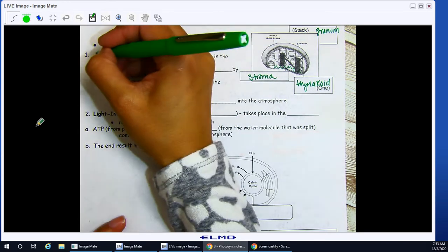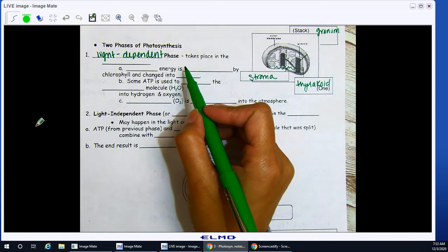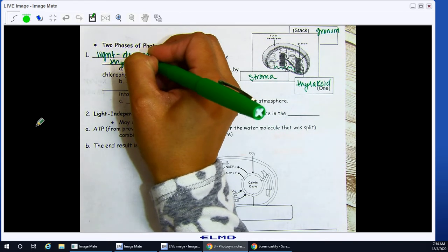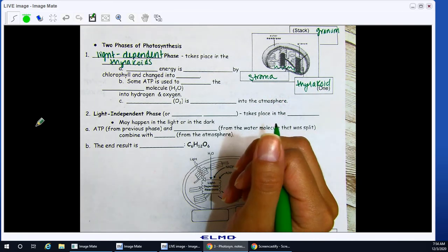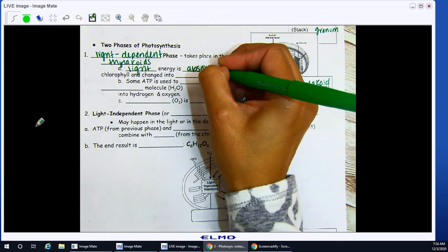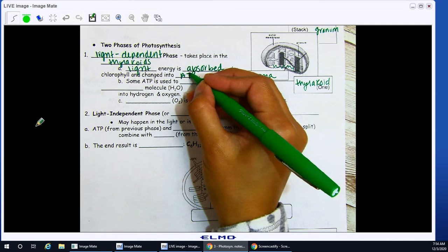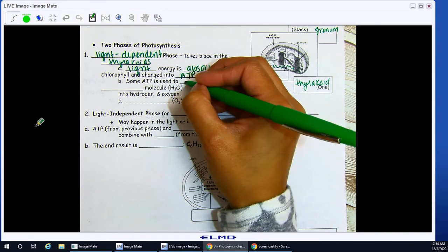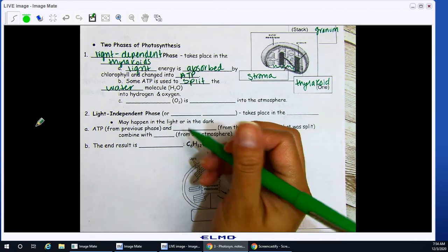Our first option is the light-dependent phase. Light-dependent phase of photosynthesis takes place in the thylakoids. So, light is going to be absorbed by your chlorophyll, and it's going to be converted or changed into usable energy, ATP. And we've seen ATP before, that adenosine triphosphate. Some ATP is going to be used to split the water molecule, H2O.